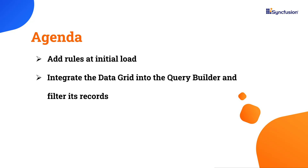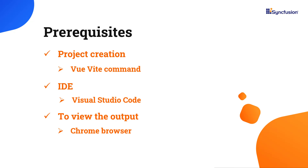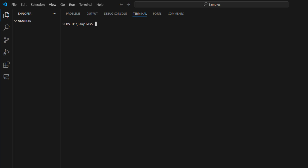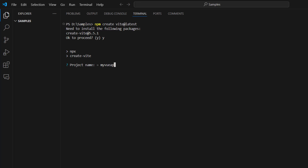Let me start with the application creation process. I'm going to create a View application using the View CLI command. Make sure you have the latest versions of View and Node.js installed to follow along. I will edit my code using Visual Studio Code and view the output result in the Chrome browser. To create a project, open Visual Studio Code and in the terminal, type the command npm create v at latest. Provide the app name, select the View Framework and the variant JavaScript.